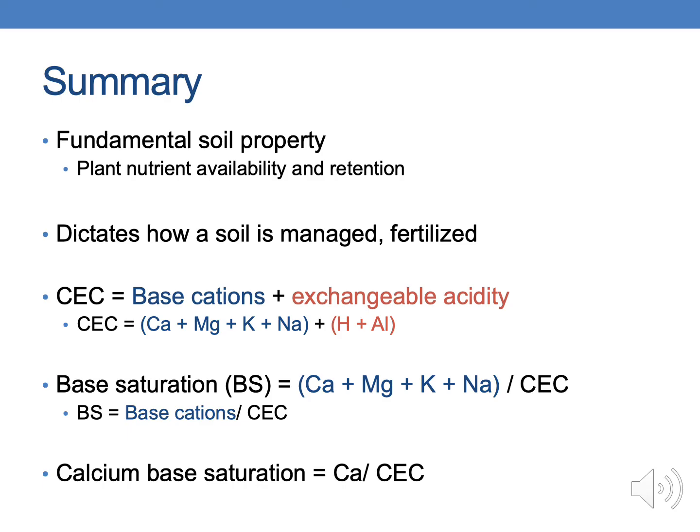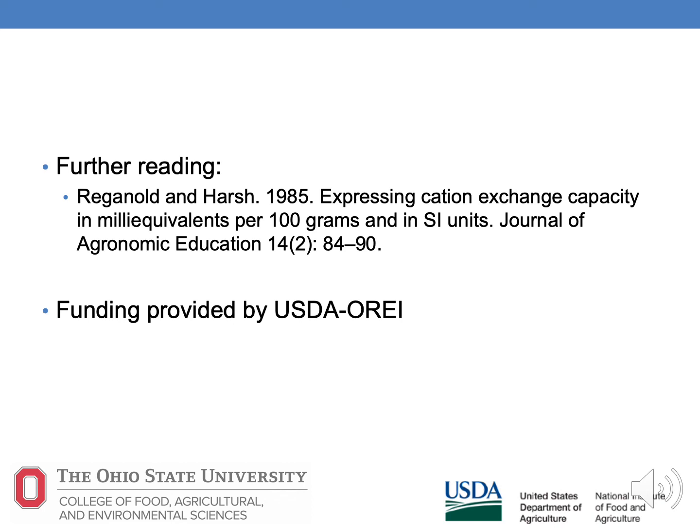To summarize: CEC is a fundamental soil property, very important for plant nutrient availability. It really dictates how a soil is managed and fertilized, and it's one of the first things crop consultants and farmers look at when they get soil test results to calibrate what kind of soil they're dealing with. CEC is a sum of cations — base cations plus exchangeable acidity. Conversely, base saturation is how much of that CEC is the base cation, expressed as a percentage of cations versus CEC. Calcium saturation is also a percentage of CEC. I'll direct folks to the citation if you really want to get into the nitty-gritty details, and thank you.